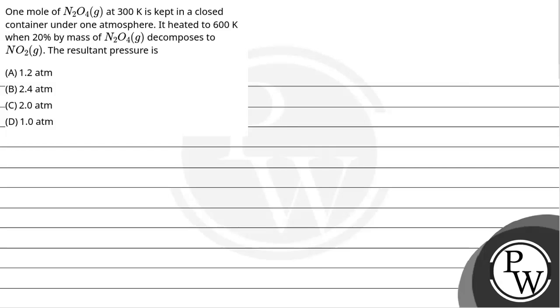Hello, let's read the question. One mole of N2O4 at 300 Kelvin is kept in a closed container under one atmosphere, heated to 600 Kelvin. When 20 percent by mass of N2O4 decomposes to NO2, the resultant pressure is - now the key concept related to this question is the ideal gas law.